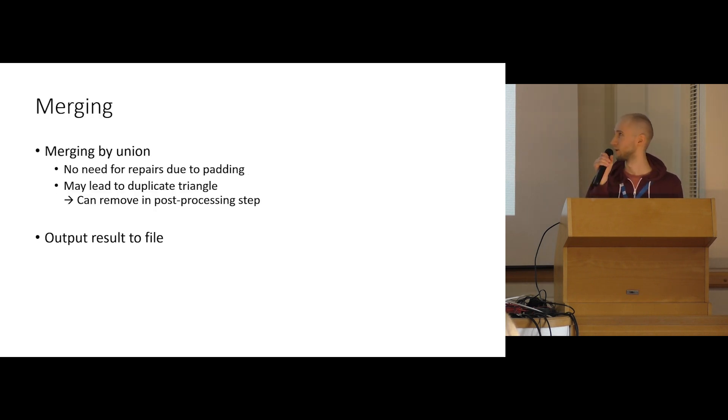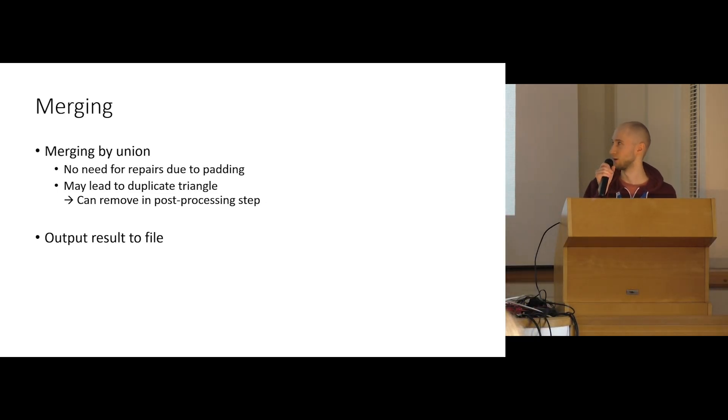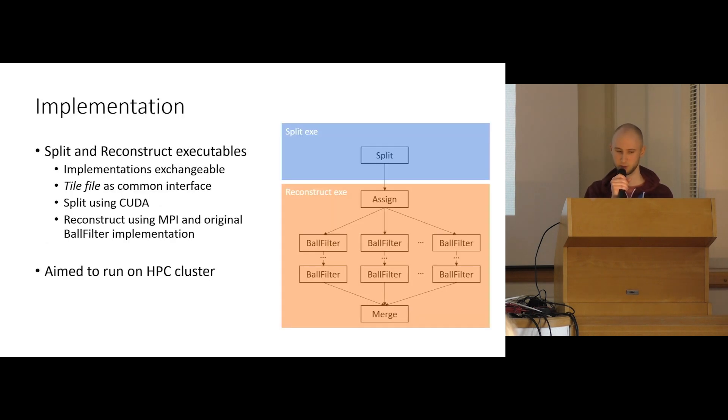So now we have the results within each tile. And we need to merge them. Now it's easy because we already have all the triangles within all tiles. So we don't need to do any complex mesh repairing. We can just take the union of all. But some triangles might be in multiple tiles. So we might get some duplicate triangles. But these can just trivially be removed by some post-processing step. And then we just output it to some file.